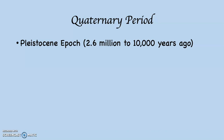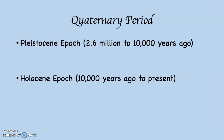The Pleistocene is a time of extensive glacial advance interspersed with varying degrees of glacial retreat. Then the Holocene Epoch, which is what we're in now, has gone from 10,000 years ago — the end of the glacial times — to the present.